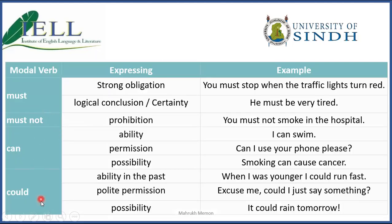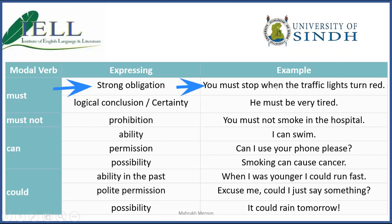Now we will see different modal verbs, what they are used to express, and their examples. For example, 'must': must is used to show obligation and strong obligation, or a logical conclusion or certainty. For strong obligation the example would be: 'You must stop when the traffic lights turn red.' So 'you must do this' — it's a strong obligation.